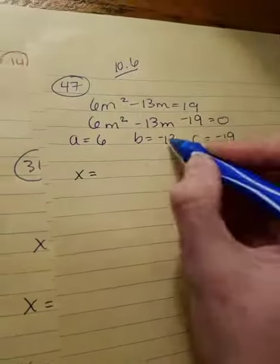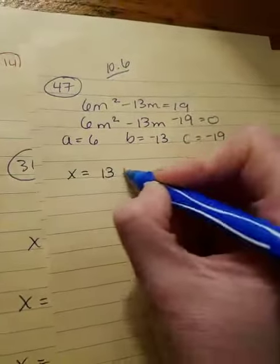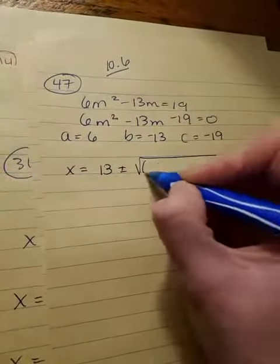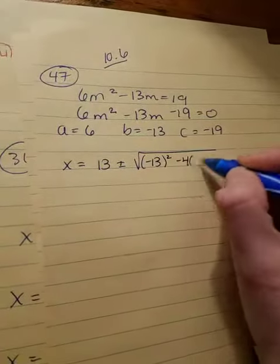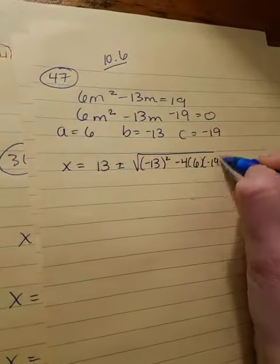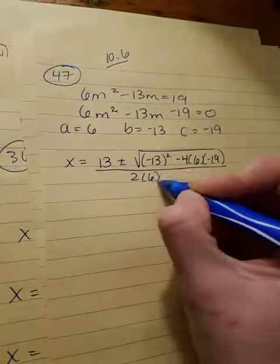Substituting into the equation, negative b, so it's going to be positive 13, plus or minus the square root of quantity negative 13 squared, minus 4 times a times c, all over 2a.